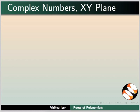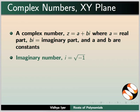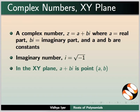Let us look at complex numbers in the xy-plane. A complex number is expressed as z equals a plus bi, where a is the real part, bi is imaginary part, a and b are constants, and i is imaginary number equal to square root of minus 1. In the xy-plane, a plus bi corresponds to the point (a, b).